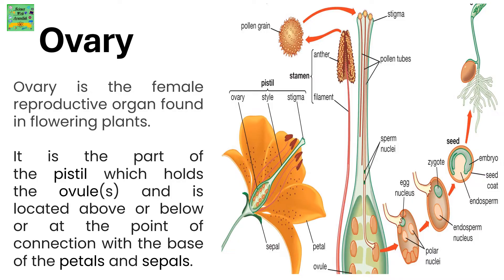The stigma is the topmost part, the style is the length of the pistil, and the ovary is the bottom part. The ovary is the female reproductive organ found in flowering plants. It is the part of the pistil which holds the ovules and is located above or below the point of connection with the base of the petals and sepals. Just as anthers contain pollen grains, ovaries contain the ovules.